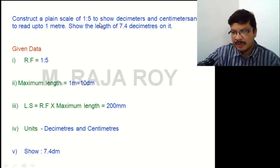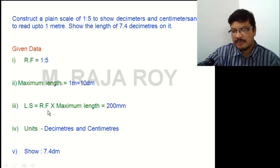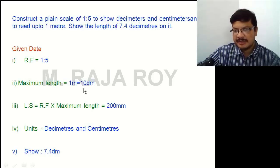After reading the problem, extract the data in the following steps. The first step is extracting the RF value — RF is 1 is to 5. In the second step, extract the information like maximum length. Maximum length is 1 meter, and 1 meter equals 10 decimeters. In the third step, find the length of the scale. Length of scale equals RF into maximum length. RF equal to 1 by 5, into maximum length equal to 10 decimeters.